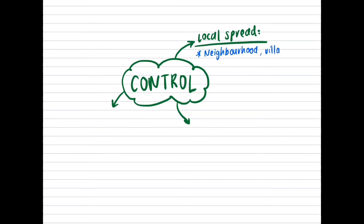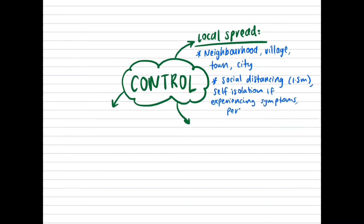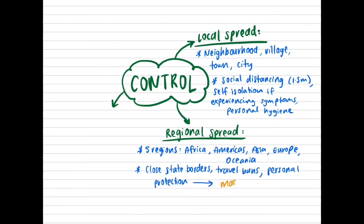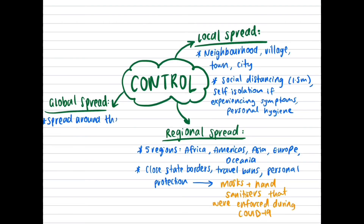At a local spread — neighborhood, village, town, or city level — methods include social distancing, self-isolation if experiencing any symptoms, washing hands, and practicing personal hygiene. A regional spread involves spread within the five regions: Africa, the Americas, Asia, Europe, and Oceania. Methods include closing state borders, implementing travel bans, and enforcing personal protection such as wearing masks and using hand sanitizer, as was implemented during COVID-19. A global spread requires methods such as limiting travel between countries with a high number of cases.